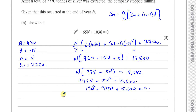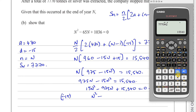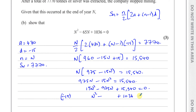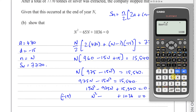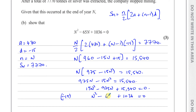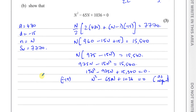Dividing through by 15: 15540 ÷ 15 = 1036, and 975 ÷ 15 = 65. So we get N² − 65N + 1036 = 0, which is exactly what we were asked to show. We used the sum formula, replaced the sum with 7770, and that's the answer to part (b).